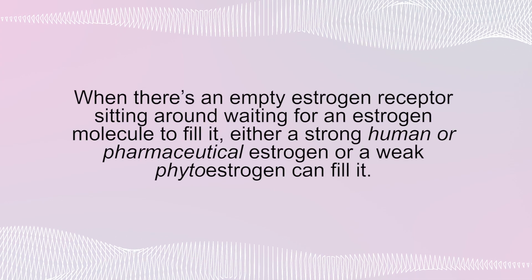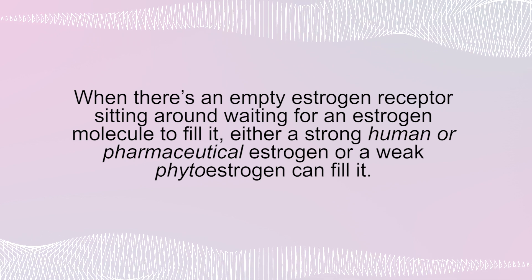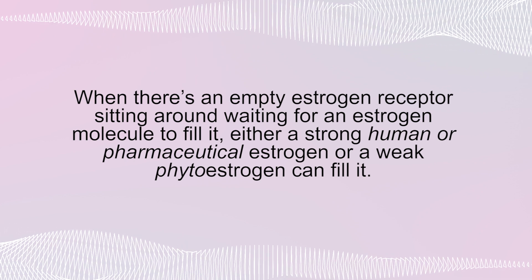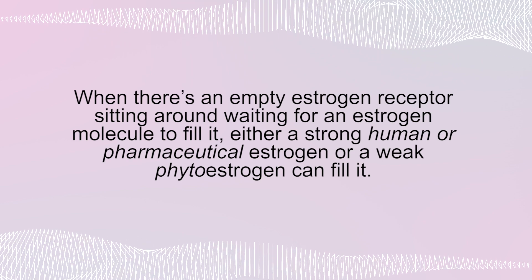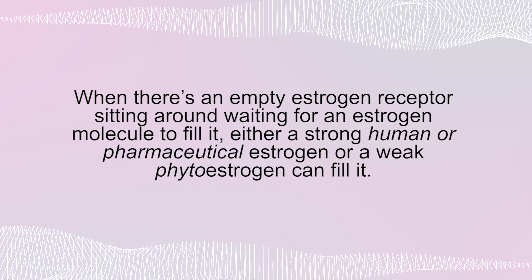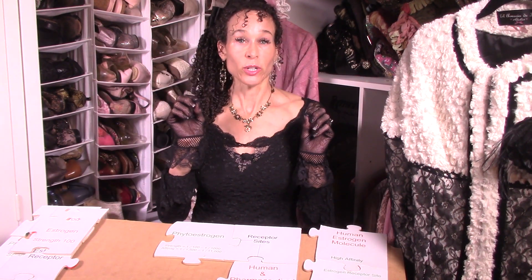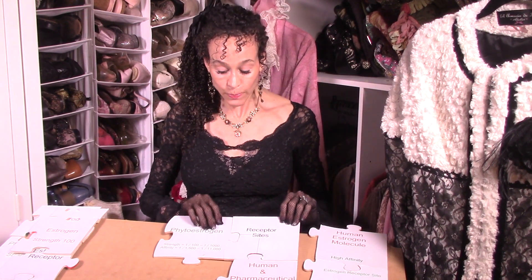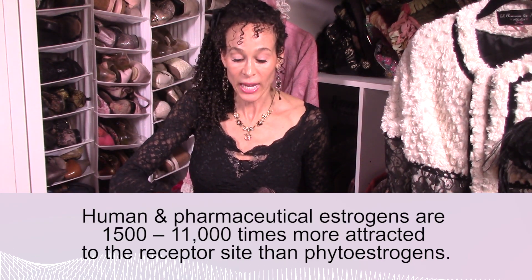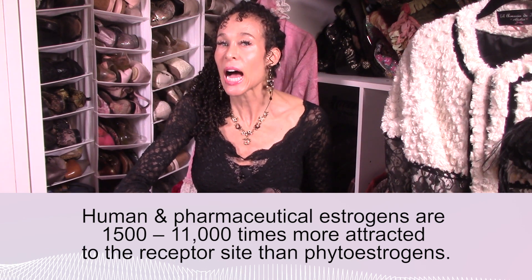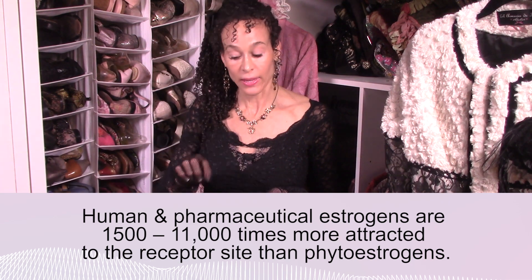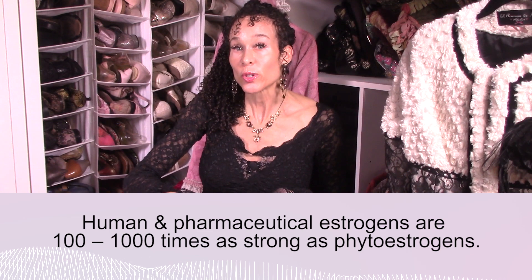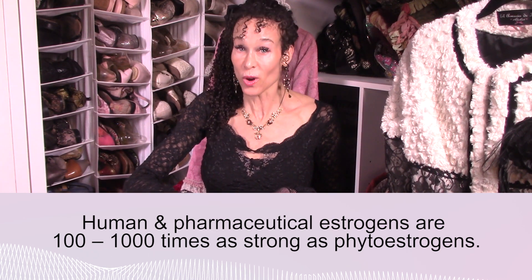In the last two tutorials I taught you that when there's an empty estrogen receptor sitting around waiting for an estrogen molecule to fill it, either a strong human or pharmaceutical estrogen or a weak phytoestrogen can fill it. Then I taught you that there's a huge difference between human estrogen or pharmaceutical estrogen versus phytoestrogens — the human or pharmaceutical estrogen is 1,500 to 11,000 times more attracted to the receptor site than the phytoestrogen, and human pharmaceutical estrogens are a hundred to a thousand times as strong as phytoestrogens.